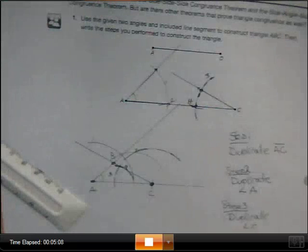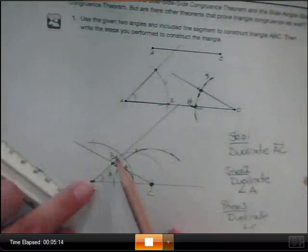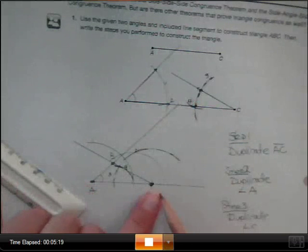So you have to do two duplications of two angles, and you draw those lines out. Like that's where my arcs intersected, I draw that line out. Do the same on the other.